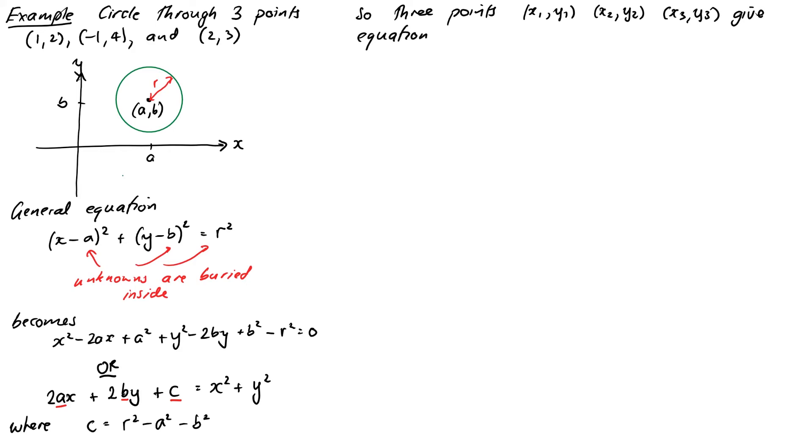These are 2x1 times a plus 2y1 times b plus c equals x1 squared plus y1 squared. 2x2 times a plus 2y2 times b plus c equals x2 squared plus y2 squared. And then 2x3 times a plus 2y3 times b plus c equals x3 squared plus y3 squared. So remember our unknowns are a, b and c and now those are all linear equations in those three unknowns.